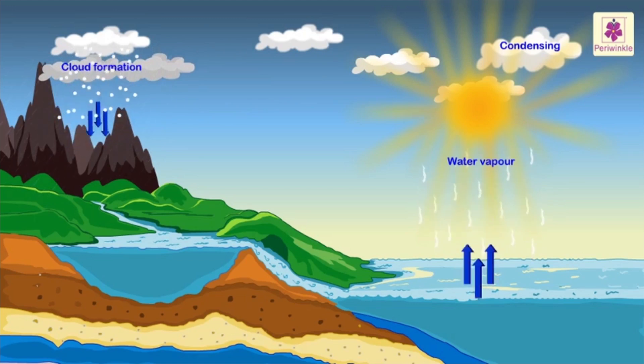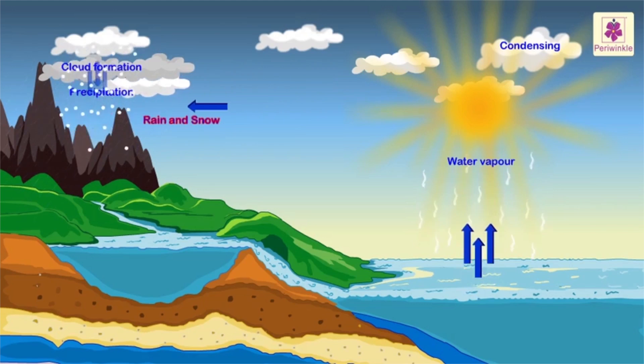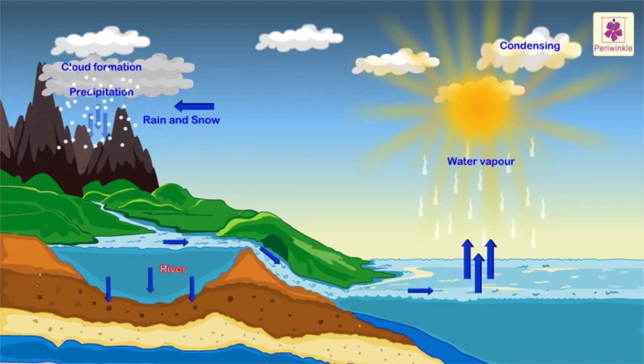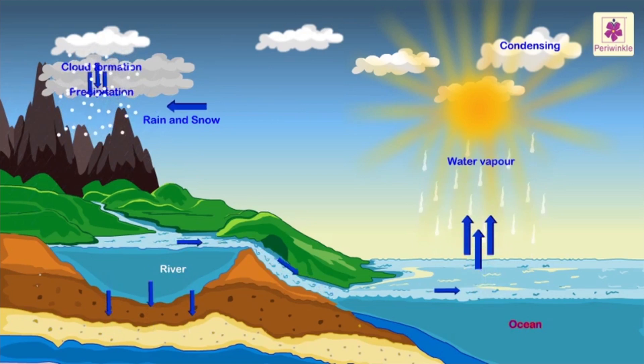The clouds so formed then come down on the earth in the form of precipitation as rain or snow. On the earth, water flows to rivers, seas, and oceans, while a part of it gets absorbed by the earth and is called ground water.